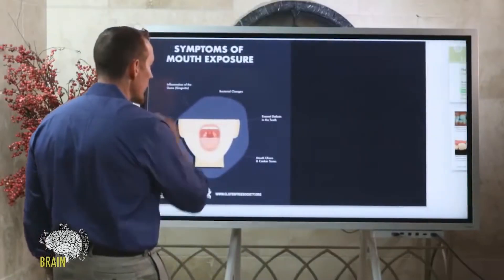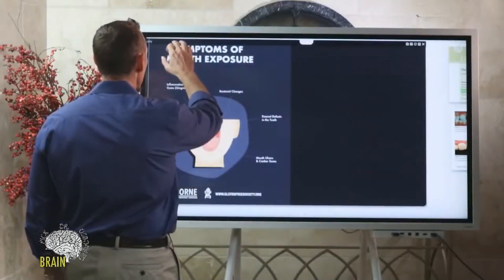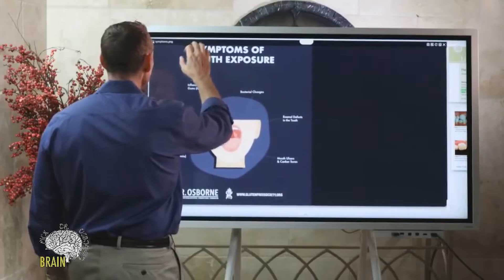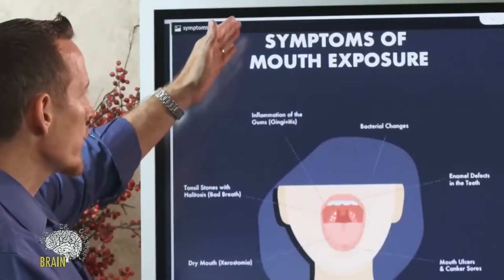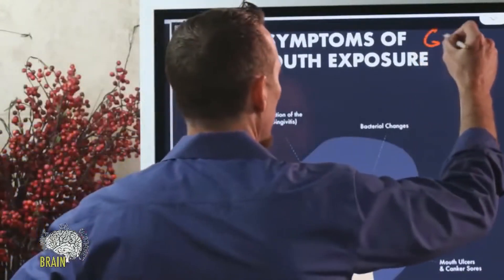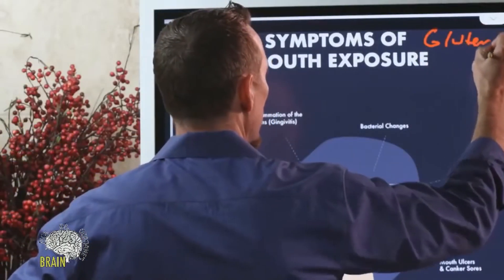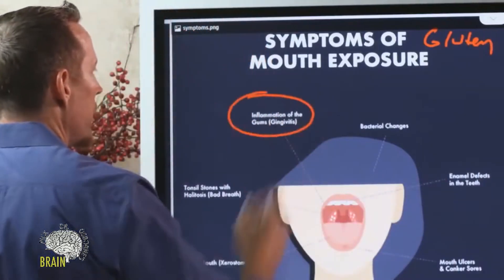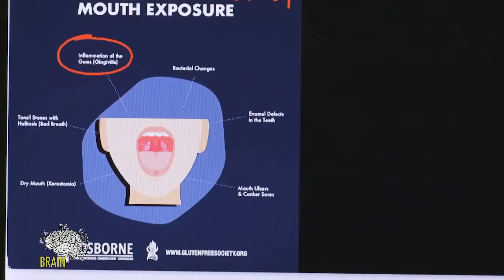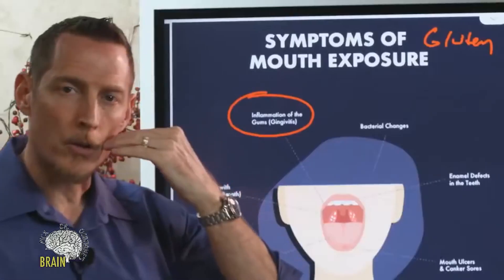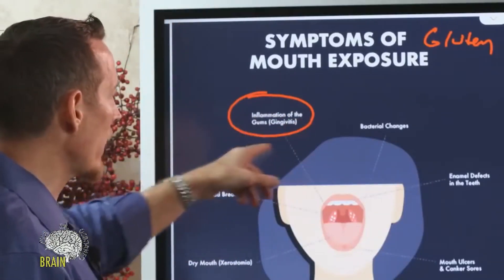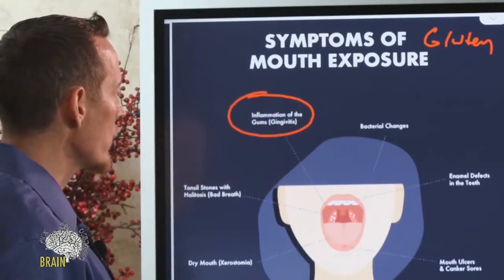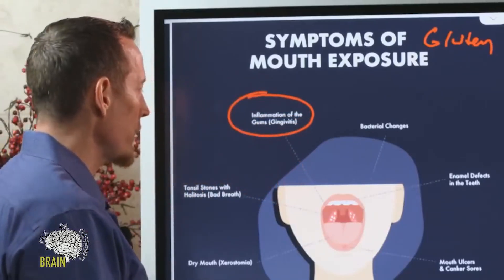Let's talk about some of the other symptoms of gluten exposure in the oral cavity. Number one is gingivitis — inflammation of the gums directly. As the gums are inflamed they'll start to recede, making it easier for your teeth to begin to decay. Gingivitis is kind of the earlier symptom associated with tooth loss coming your way.